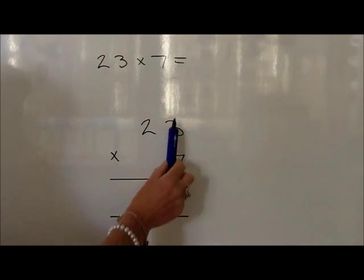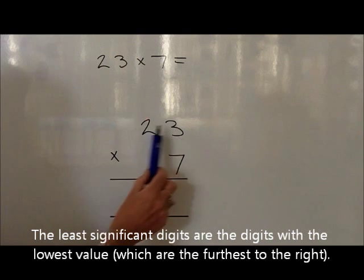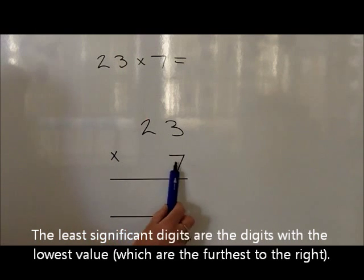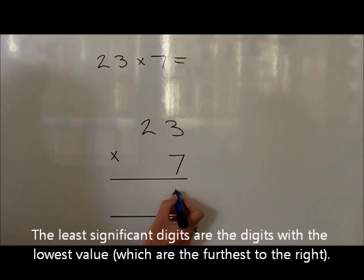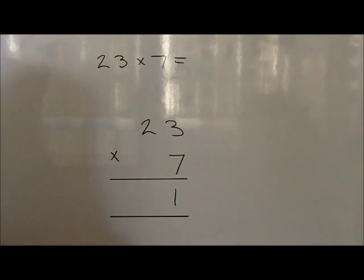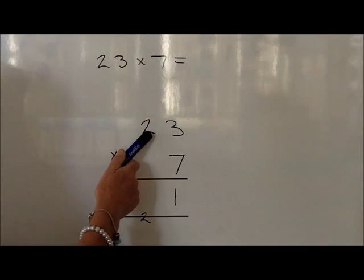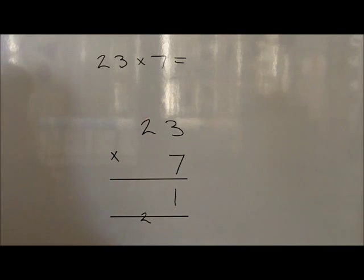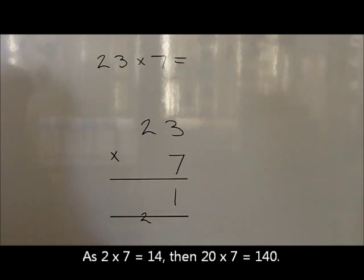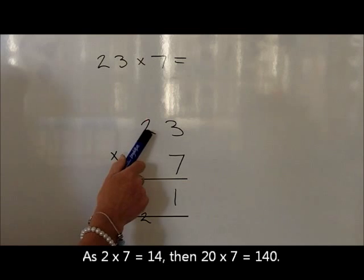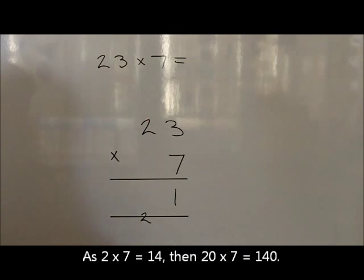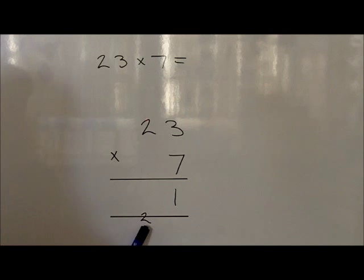We then start with the least significant digit, looking at 3 times 7, and know that that's 21. So we write a 1 in the units and carry the 2 tens. We now look at 20 times by 7. Because we know that 2 7s are 14, 20 times by 7 is 140, plus the 20 that's carried, we write 160.